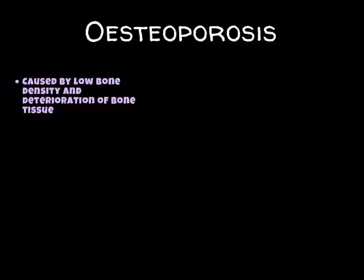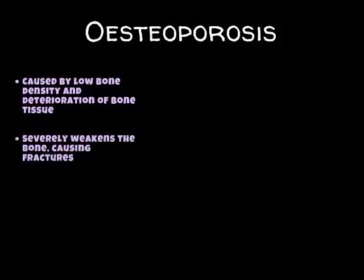One of the first problems we find with the skeletal system and indeed the muscular system is osteoporosis. You might have heard of osteoporosis before — it's very common in the elderly but it can affect lots of different people. Osteoporosis is caused by low bone density and the deterioration of bone tissue, which means your bones are breaking up very slowly, severely weakening the overall bone. Little fractures can become larger fractures and then total breaks.